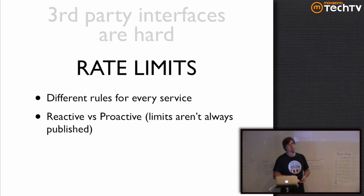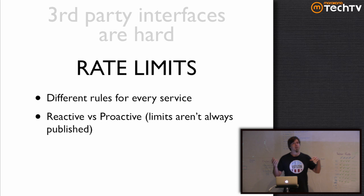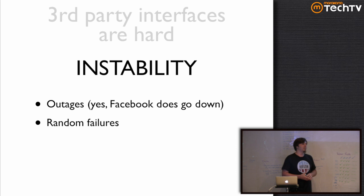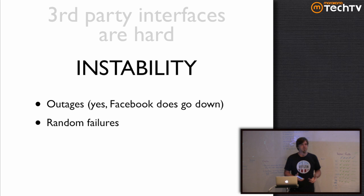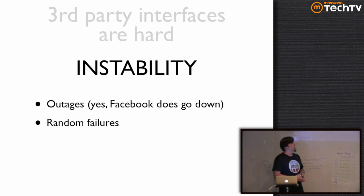Another problem is that third parties always have rate limits. These vary widely from one service to another — there are all kinds of weird corner cases and rules. And some don't even publish their rate limits, like Facebook, so you have to deal with them reactively rather than proactively. This causes a lot of problems. Instability — yes, even Facebook goes down. You have to deal with outages, random failures, 500s, 503s, fail whales — all the kinds of stuff that in your internal system you work really hard to work around. You are confronted with them head on in third-party interfaces.